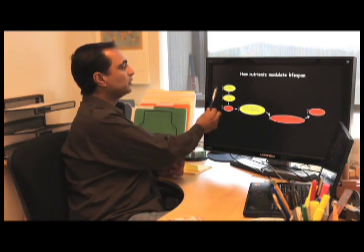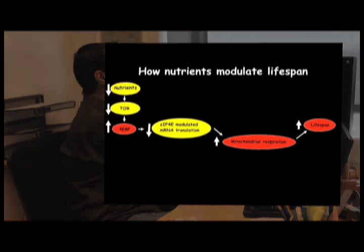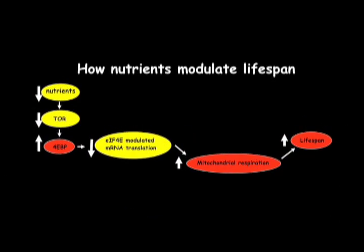The model we propose is that dietary restriction, or reducing nutrients, inhibits the TOR pathway and enhances the activity and levels of 4-EBP, which leads to an inhibition of EIF-4E.